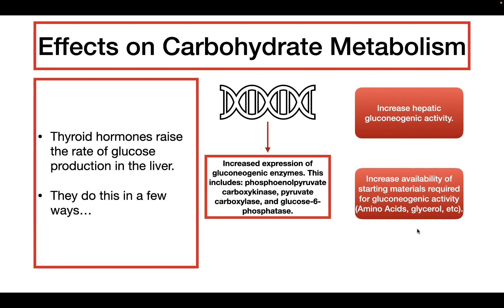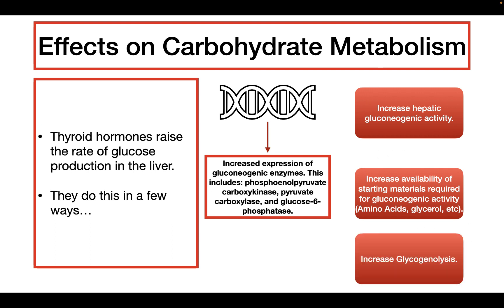Lastly, thyroid hormone can also increase glycogenolysis, which is the process of hydrolyzing glycogen into glucose — therefore the liver is producing more glucose in that way. In summary, thyroid hormone increases gluconeogenesis and glycogenolysis, and both of these processes are going to increase the rate of glucose production by the liver.